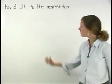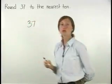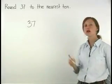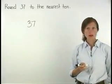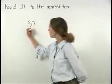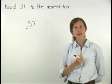To round 37 to the nearest 10, first find the digit in the rounding place, which in this case is the 3 in the tens place.